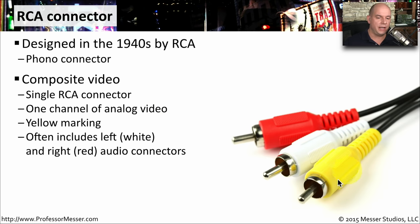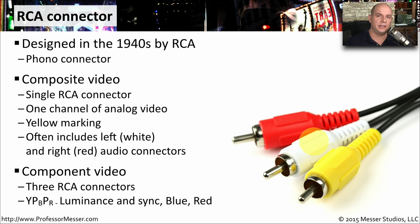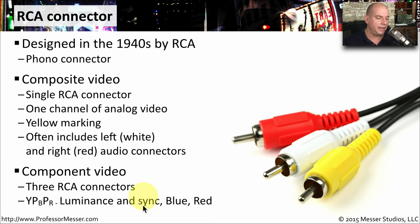You'll often see this yellow RCA connector combined with a white and red RCA connector. The yellow sends the video, and the red and white send the left and right audio channels. For sending high-definition signals over RCA, we use component video, which consists of three separate RCA connectors: one for Y, one for PB, and one for PR — standing for luminance and sync, blue, and red signals.